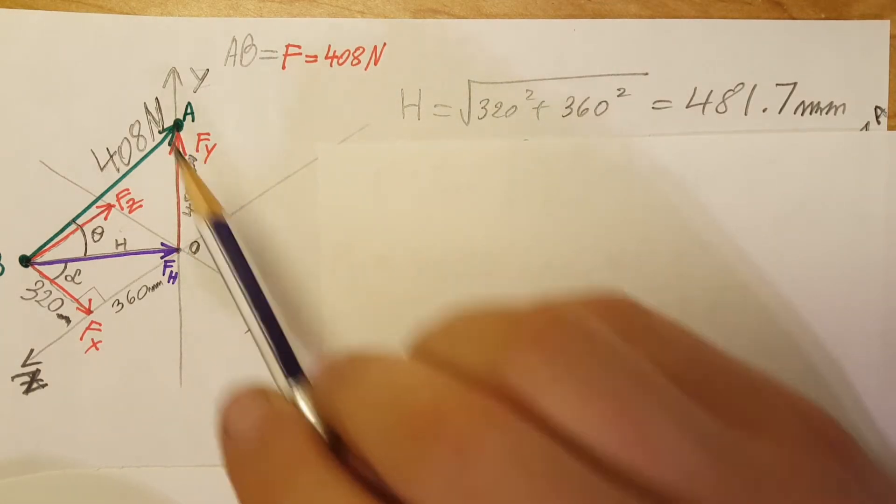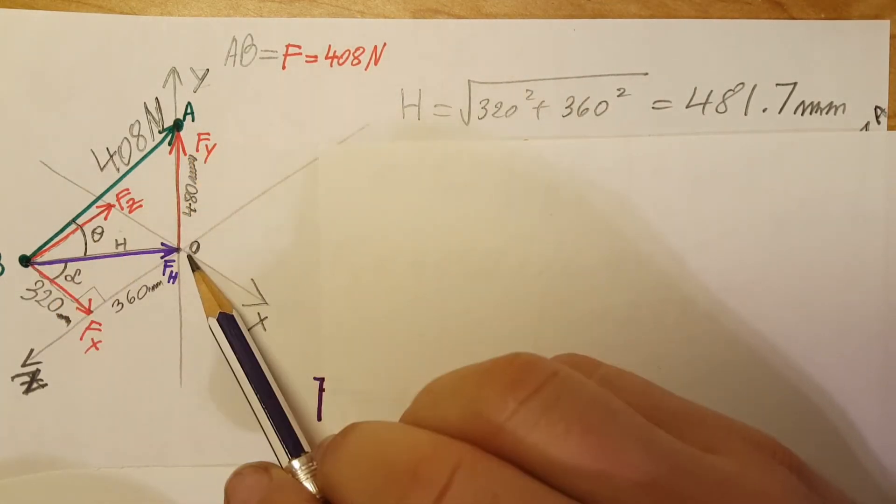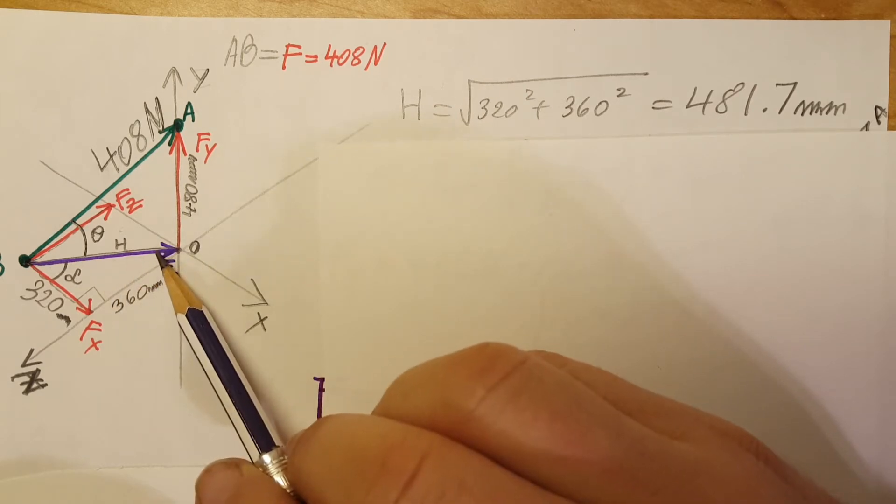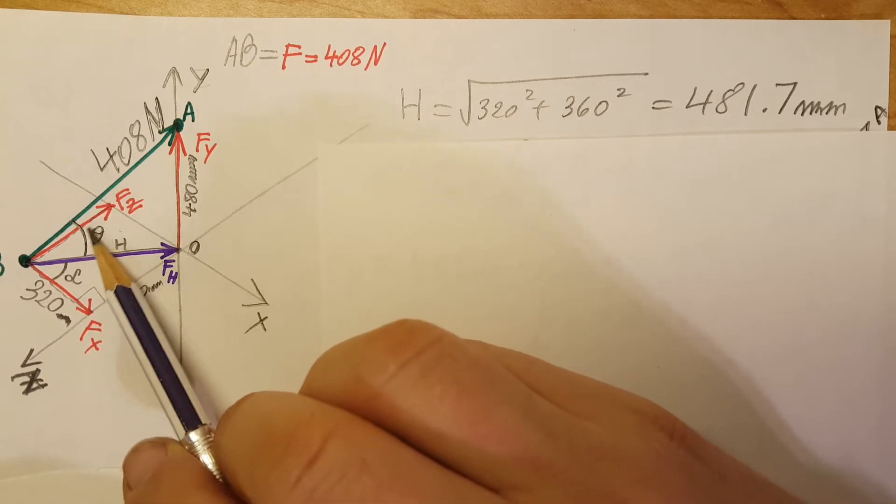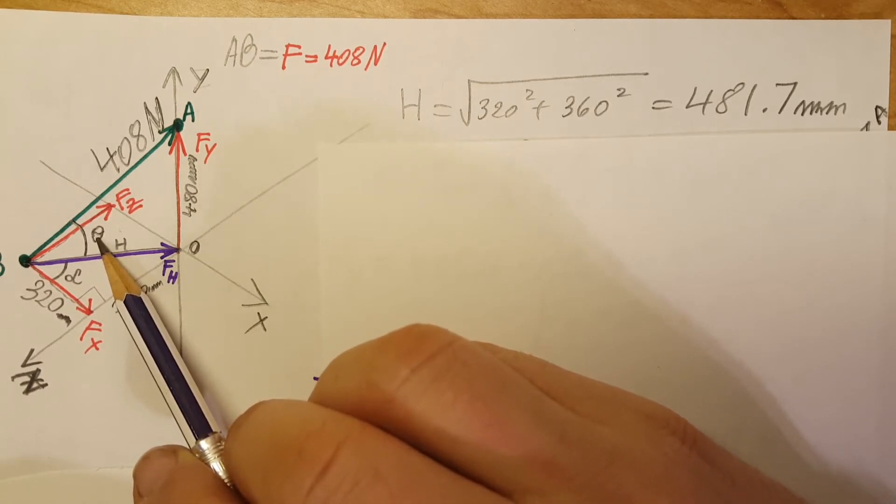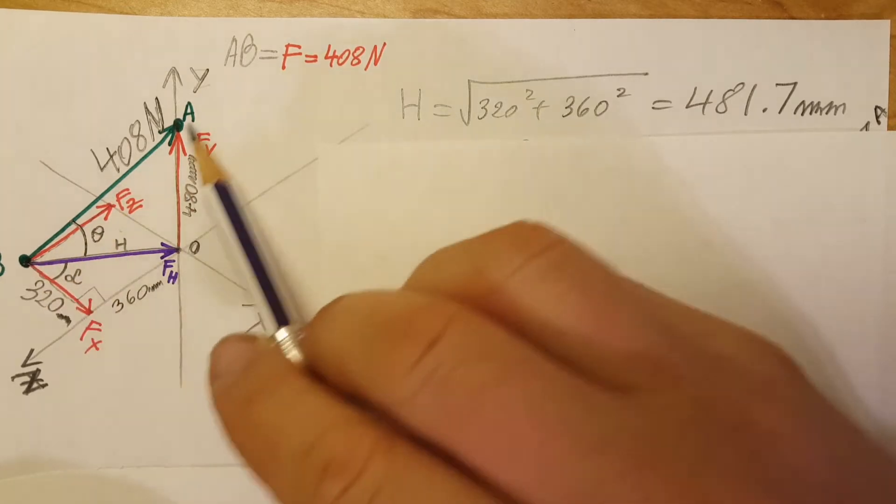So from the triangle which is B, A, and O, which is another right triangle, we are able to find theta. And with this theta we will be able to start finding some of the components of our force.